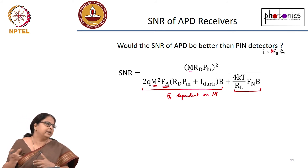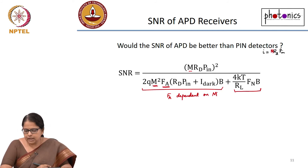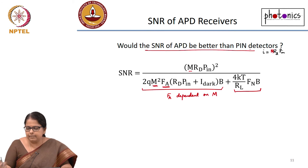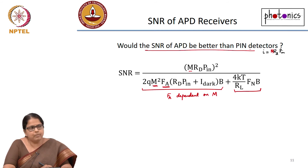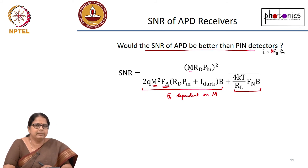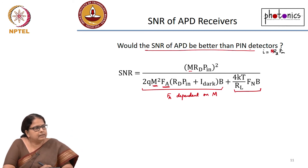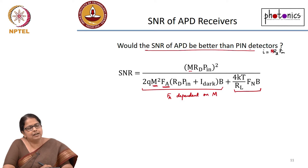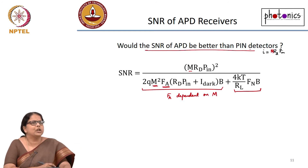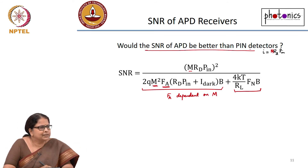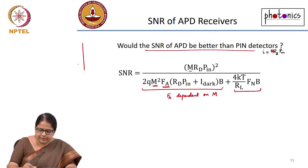The question is: would the SNR of an APD be better than that of a PIN diode? You need to analyze separately for the thermal-noise-limited regime and the shot-noise-limited regime, and the answer depends on which regime you are operating in.